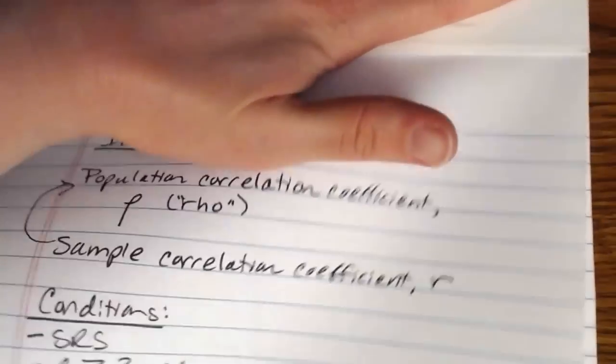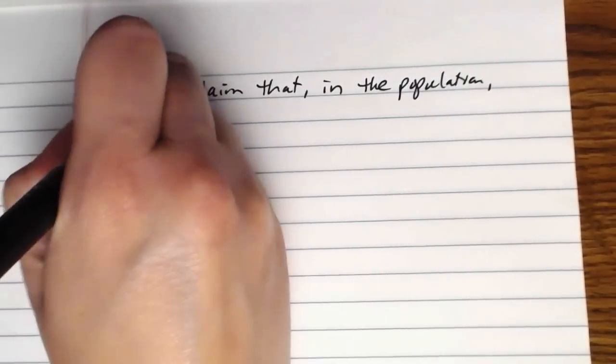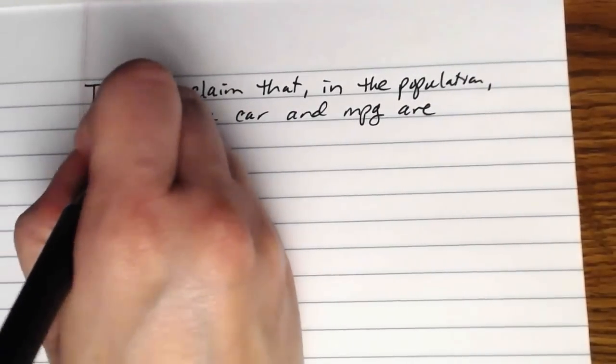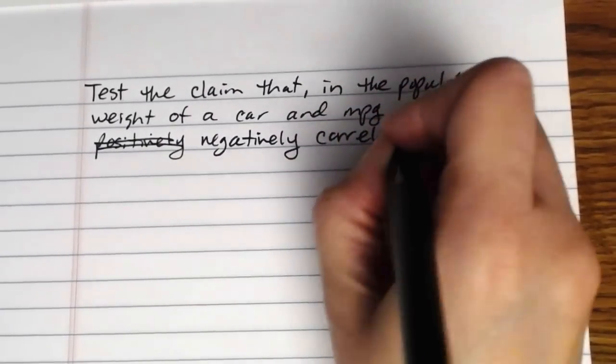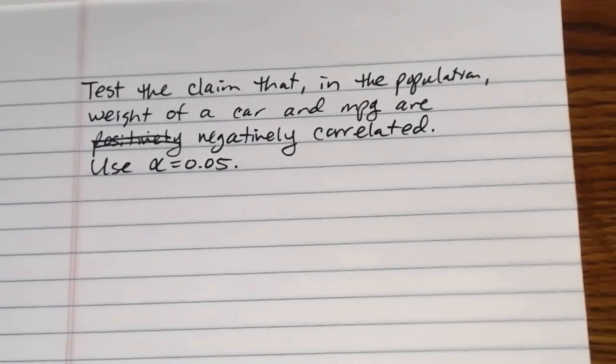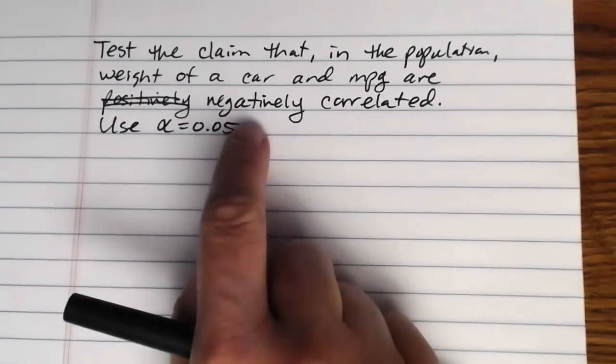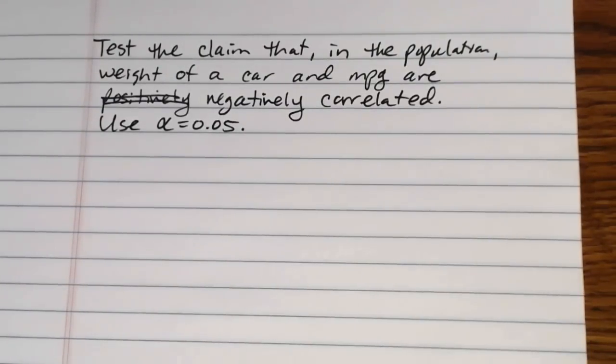So that's essentially what the hypothesis test will do for us. So let's say here, what I wanted to know is I wanted to test the claim that in the population, weight of a car and miles per gallon are negatively correlated. And let's say we wanted to use a five percent level of significance. I want to test the claim that they're negatively correlated in the larger population. In other words, that as the weight of the car increases, the miles per gallon would go down. That's what a negative correlation would show.